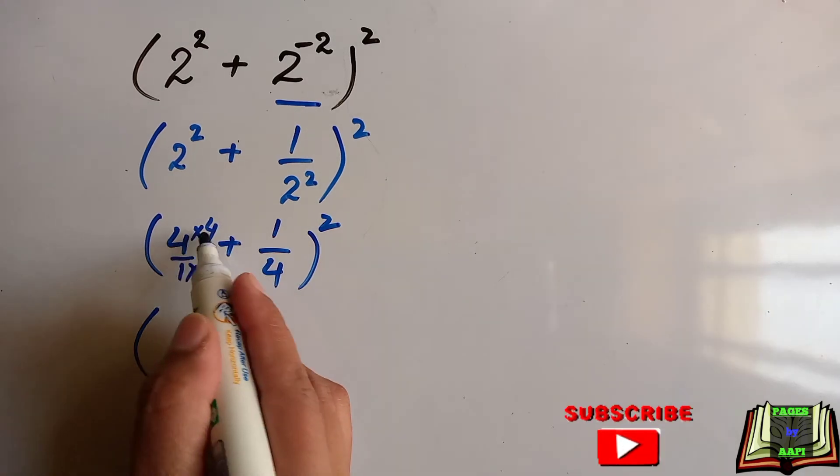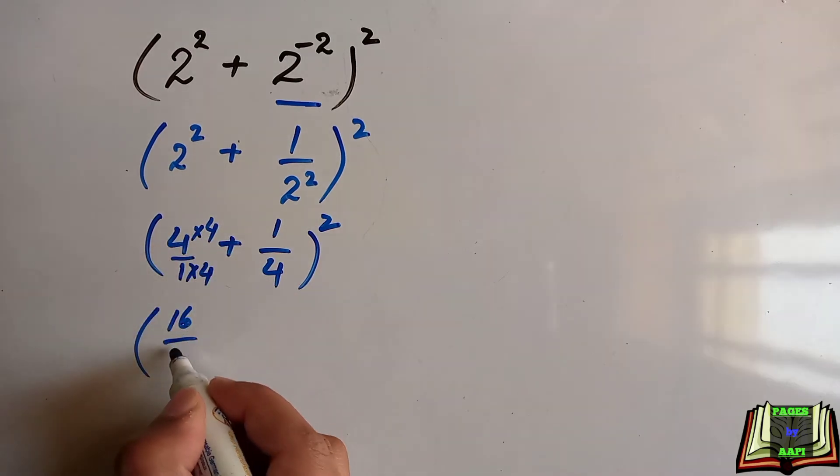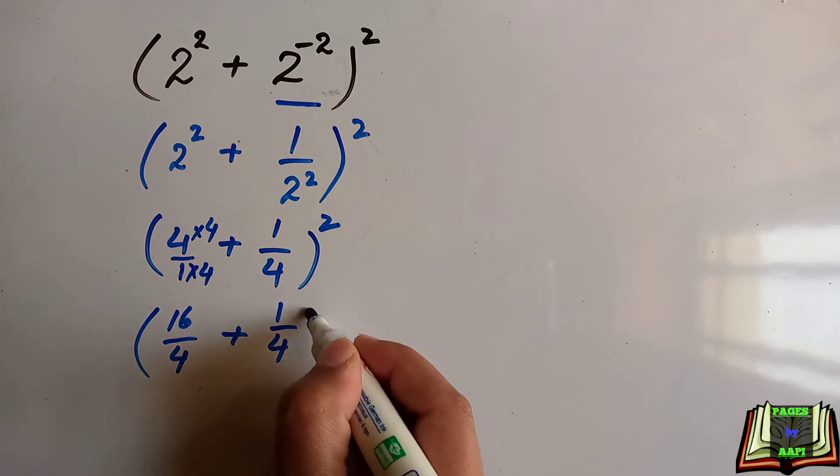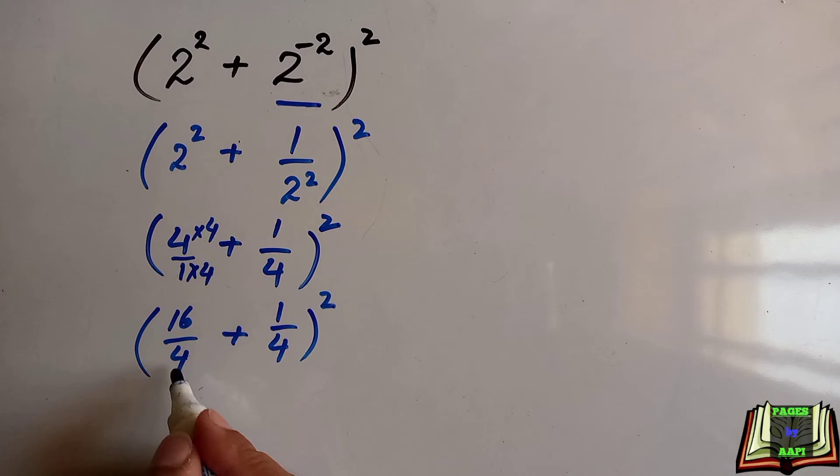After multiplying, we get 16 over 4, plus 1 over 4 as it is, whole square. Now the denominators are the same, so we can add the numerators: 16 plus 1 is 17 over 4, whole square.